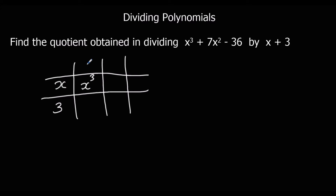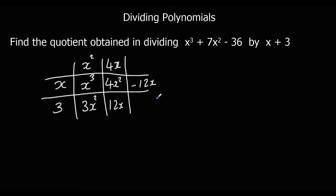What multiplies by x to give me x³? That's x². Now I can fill in: 3 times x² is 3x², but I wanted 7x², so I need another 4x². What multiplies by x to give me 4x²? That's 4x. 4x times 3 is 12x. I didn't want any x terms, so to get rid of the 12x I need -12x. What multiplies by x to give -12x? Negative 12. -12 times 3 is -36, which is what I wanted. So the quotient is x²+4x-12.